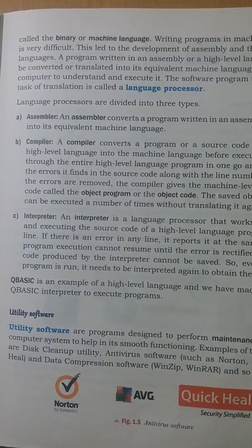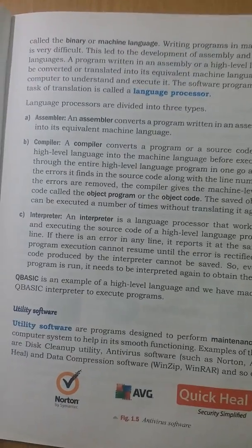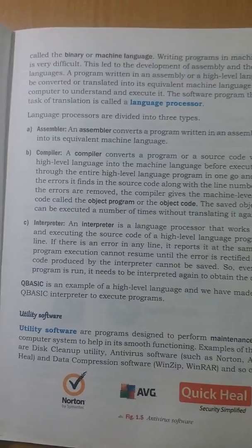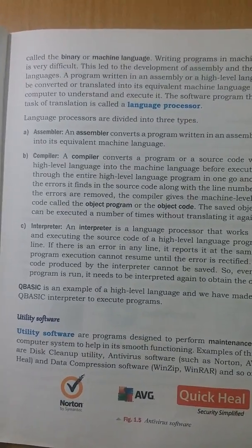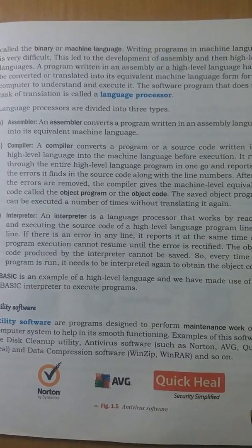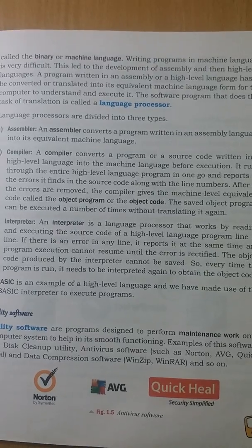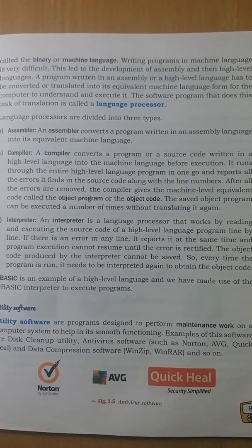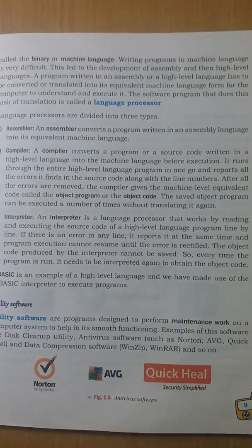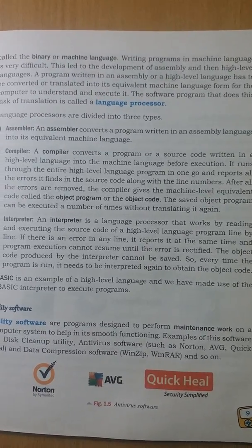There are three types of language processors or translators: assembler, compiler, and interpreter. Assemblers are translator programs which convert assembly language — which uses mnemonics, that is short forms, to write the program — into machine language so that the computer can understand the program.